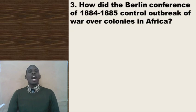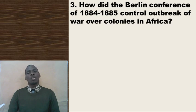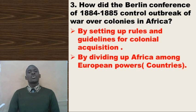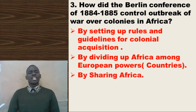Question three: How did the Berlin Conference of 1884 to 85 control the outbreak of war over colonies in Africa? Point one, by setting up rules and guidelines for colonial acquisitions. Point two, by dividing up Africa among European powers. Point three, by sharing Africa among European powers.